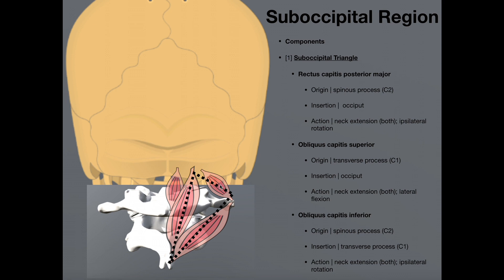Then this muscle right here is called the obliquus capitis superior. The obliquus capitis superior originates on the transverse process of C1, the atlas, and then it inserts on the occiput. Recall from previous videos that if we have 'capitis' in the name of a muscle, that implies it's going to insert somewhere on the skull, usually the occiput. The one exception to that is actually going to be the next muscle, which we'll cover in a minute.